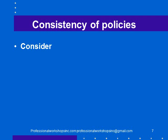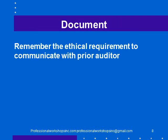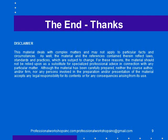It's important to document what we have done, so it's useful to have a checklist that reminds us of the requirements of ISA 510. The checklist should also remind you of the ethical requirement to communicate with the prior auditor, which is something that's easy to forget. Thanks for listening.